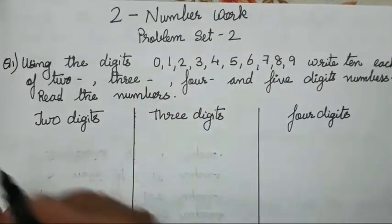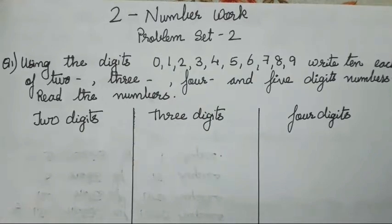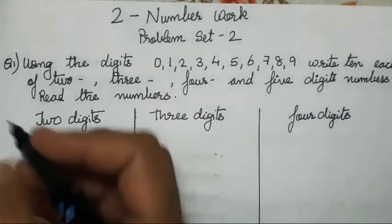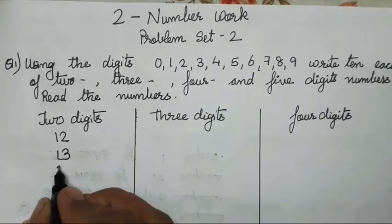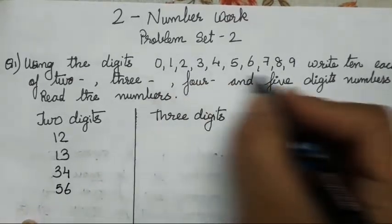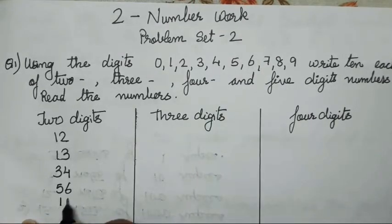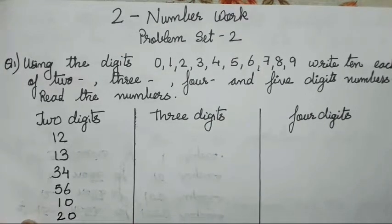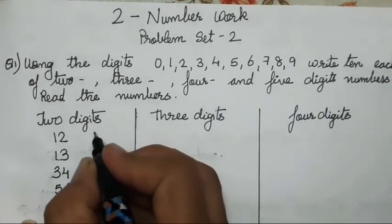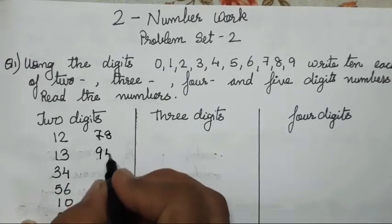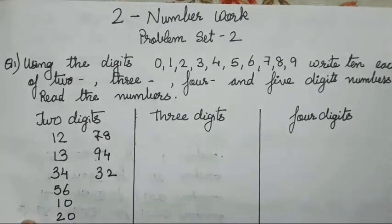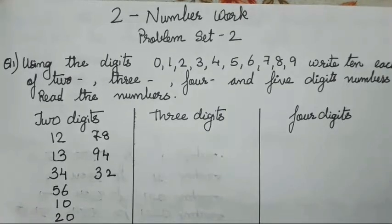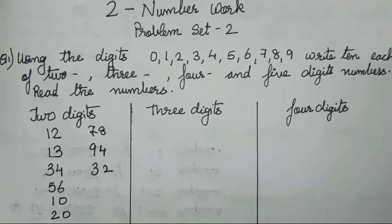So first you will write two digit numbers. We know unit and tens. Any numbers you all can write — I will write 12, 13, 34, 56, 10, 20, 40, 78, 94, 32. Let's count: 1, 2, 3, 4, 5, 6, 7, 8, 9, 10. So here is a set of 10 two-digit numbers. It is very easy; you all can write any numbers of your choice.